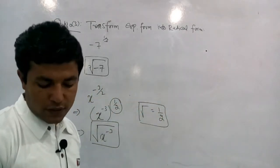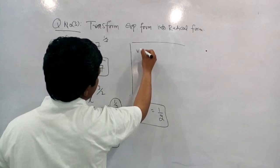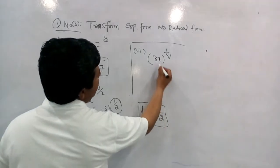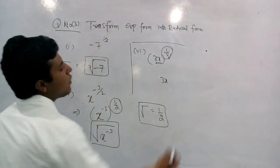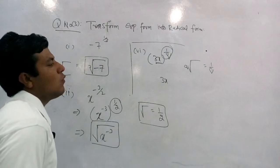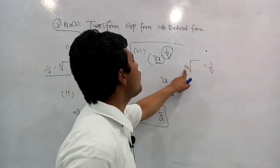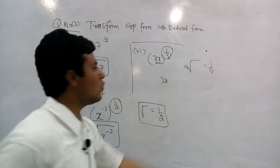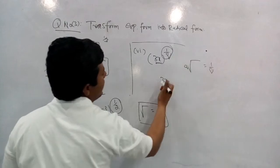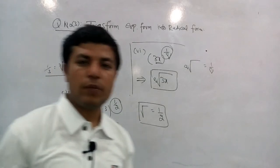ایک اور question ہے: 3x to the power one by q. تو 3x اور one by q - یہ اس root کے برابر ہوگا۔ One by q کی جگہ q-th root لکھ سکتے ہیں - اس طرح یہ radical form میں convert ہو جاتا ہے۔